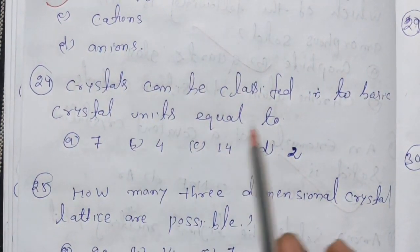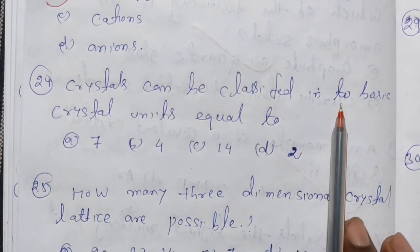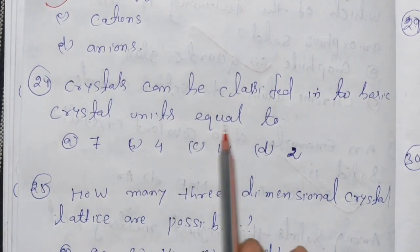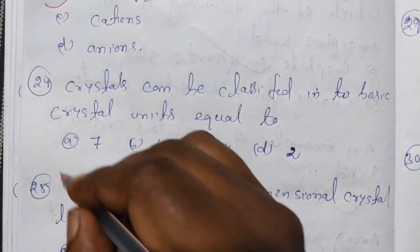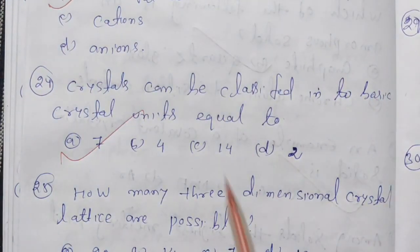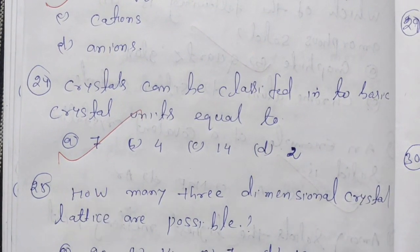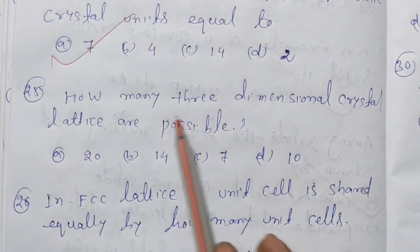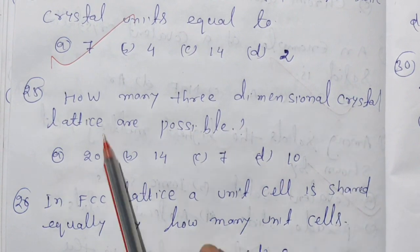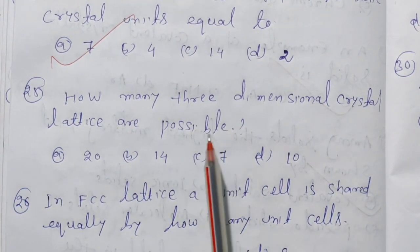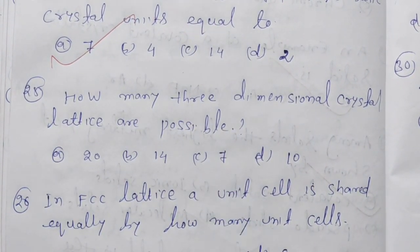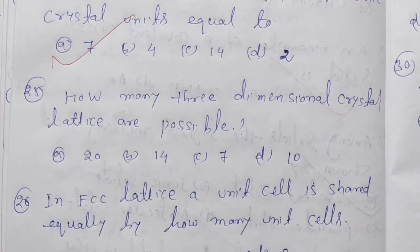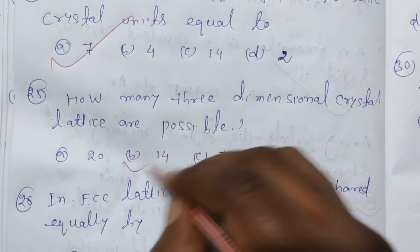Crystals can be classified into basic crystal units equal to 7. How many three-dimensional crystal lattices are possible? The answer is 14 — the 14 Bravais lattices.